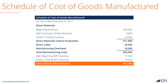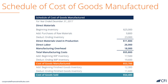Now let's compare that to cost of goods sold. If we add the beginning finished goods inventory and deduct the ending finished goods inventory, the cost of goods sold for this same period was 54,400. Remember, the cost of goods manufactured represents the goods that are created and ready for sale, while the cost of goods sold is the cost of the units that are actually sold to customers.